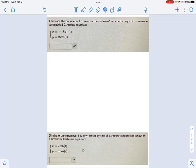This is another example of eliminating the parameter t to rewrite the system of parametric equations that we're given, right here, as a simplified Cartesian equation. In other words, with x's and y's only, and no t in it.